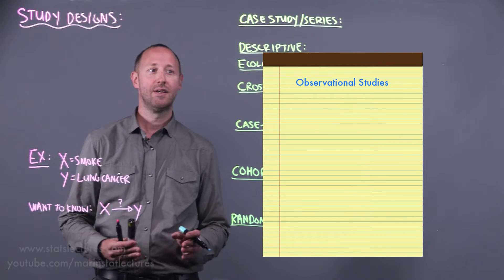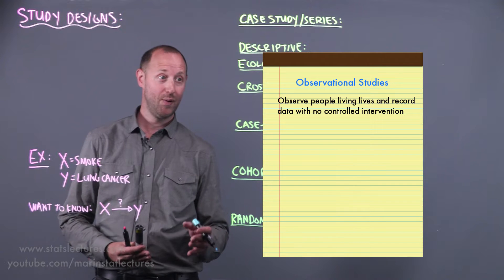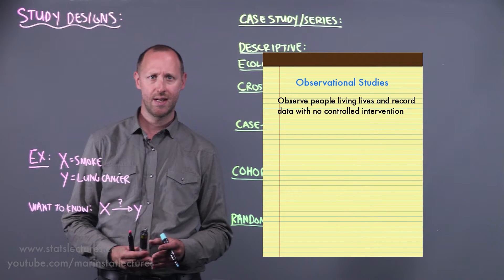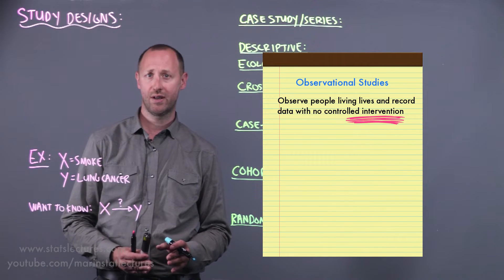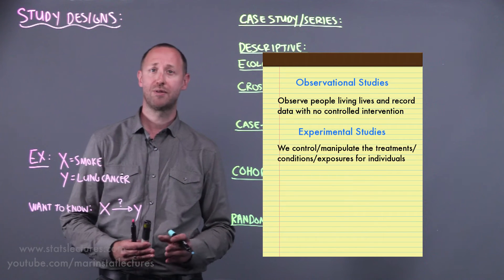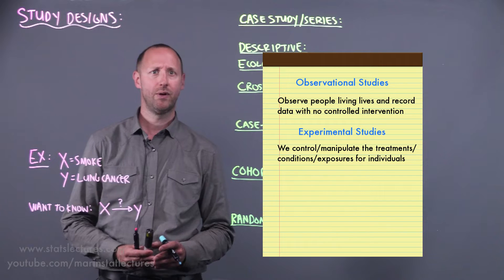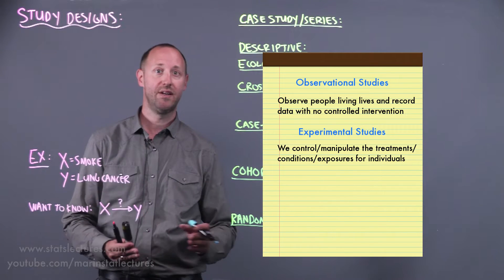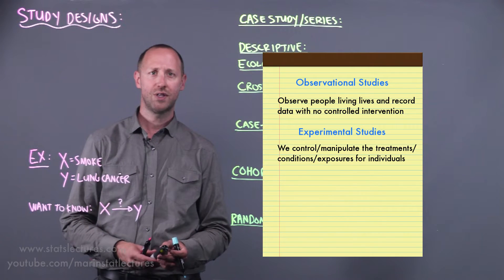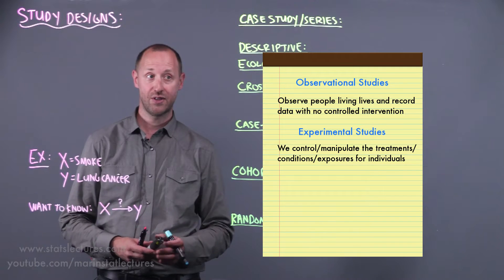Observational studies involve just observing people living their lives and recording the data, but we don't really intervene or try and control the situation. For experiments, we try and attempt to control or manipulate, for example, we randomize which treatment an individual may be receiving. Most of our review is going to focus on observational study designs.